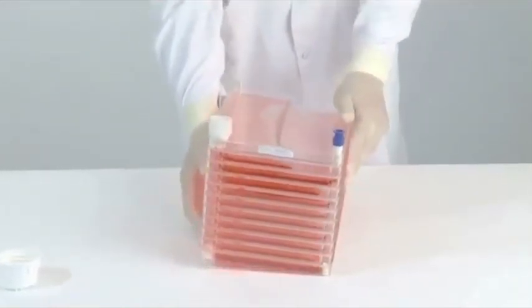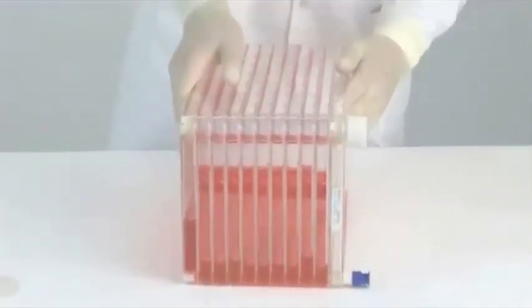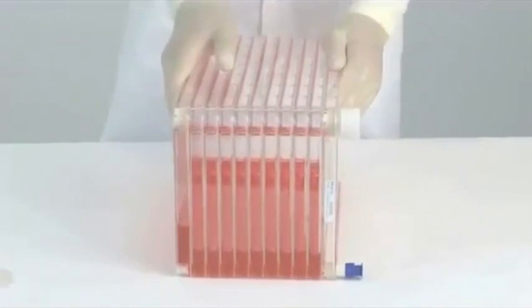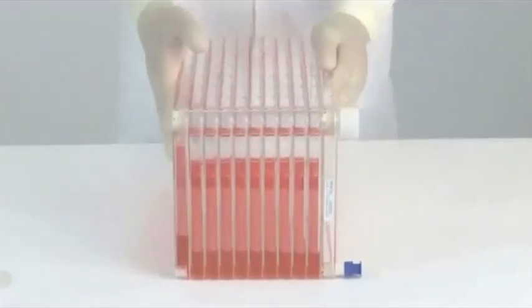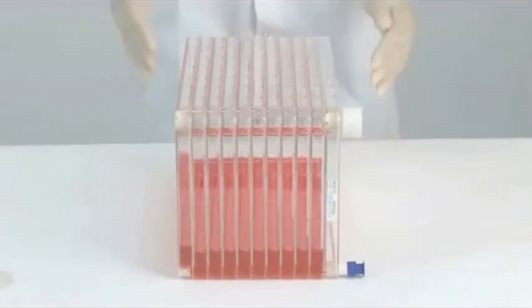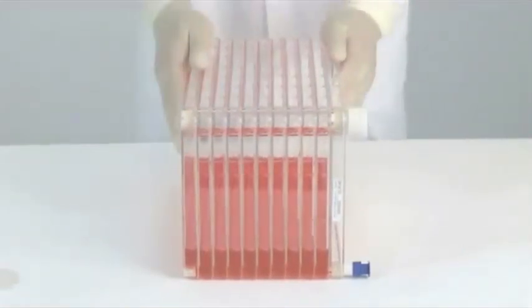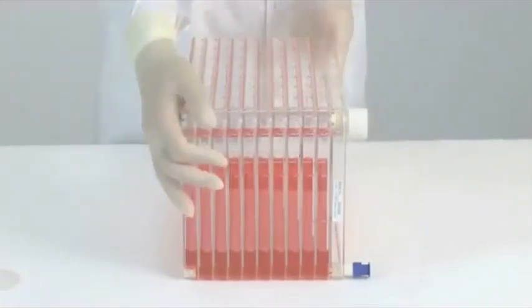Individually wrapped replacement closures are available from your NUNC distributor. To equilibrate the media level in all chambers, place the Cell Factory System on the long side with the small port. The white vent closure port should be at the top. This orientation is important as it will prevent the vent filter from getting wet.